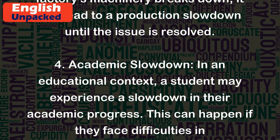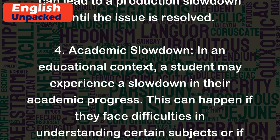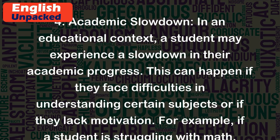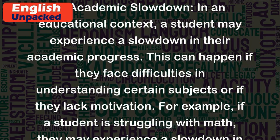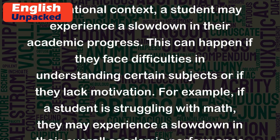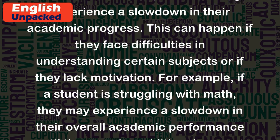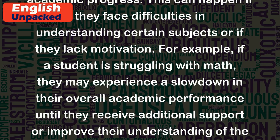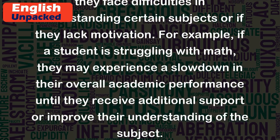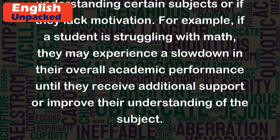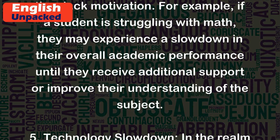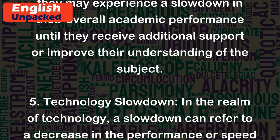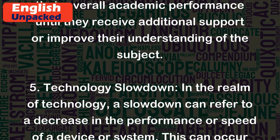4. Academic Slowdown. In an educational context, a student may experience a slowdown in their academic progress. This can happen if they face difficulties in understanding certain subjects or if they lack motivation. For example, if a student is struggling with math, they may experience a slowdown in their overall academic performance until they receive additional support or improve their understanding of the subject.